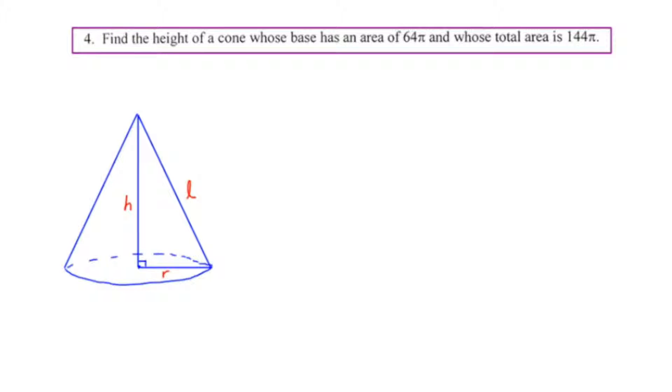Okay so let's start. Find the height of the cone whose base has an area of 64π. Let's start with that little fact right there. The base has an area of 64π. Well, the base is a circle, and the formula for circle is area equals πr².